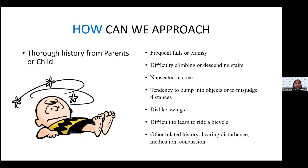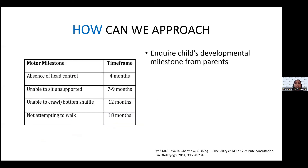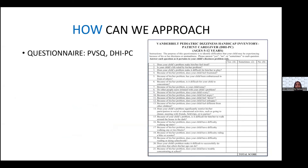How can we approach a dizzy child? First and foremost, it's important to get a thorough history from parents, caretakers, or the child when possible — asking about frequent falls or clumsiness, difficulty climbing or descending stairs, nausea in cars, tendency to bump into objects or misjudge distances, dislike of swings, or difficulty learning to ride a bicycle. Other related history pointing towards vestibular loss should be obtained, such as hearing loss, medication-induced causes, and concussion history. It's also important to inquire about the child's developmental milestones.